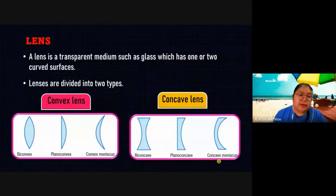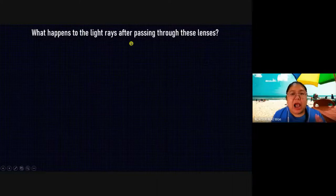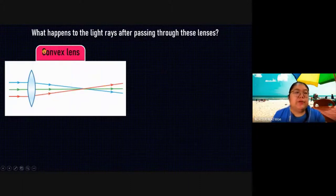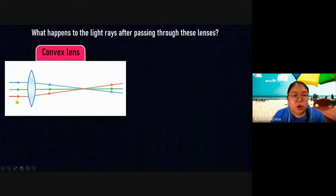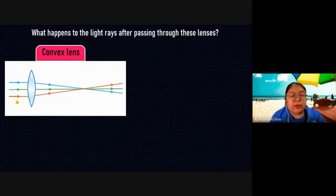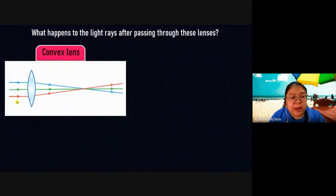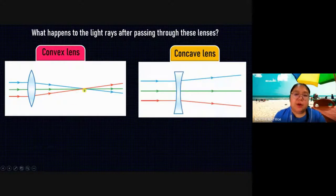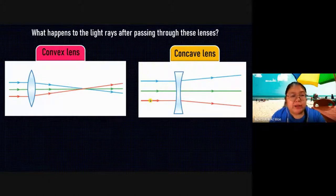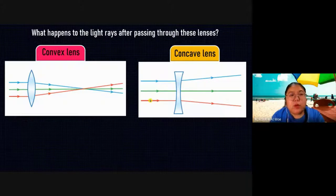Every lens has different characteristics. Now we're going to see what happens to light rays after they pass through the lens. For a convex lens, when light passes through, it will focus. You can see three rays — blue, green, and red — coming in parallel. After passing through the convex lens, they focus to one point. For the concave, three rays also come in parallel, but after passing through the concave lens, they never focus — they open wider.